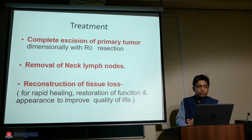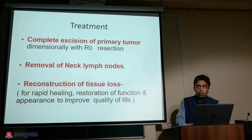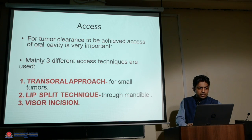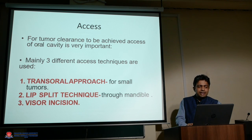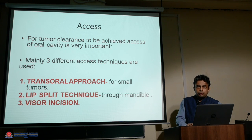After complete staging workup, a treatment plan is decided, which includes primary resection of the tumor, removal of involved lymph nodes, and reconstruction or primary closure of the tongue. For primary resection, a per-oral approach is used when the patient has good mouth opening or a small anteriorly placed lesion. Posteriorly placed lesions may require a lip-split or mandibulotomy approach, and a visor incision for more posterior locations.